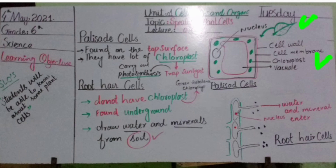The function of root hair cells is to draw water and mineral salts from the soil. You can see here the diagram of the root hair cells — water and mineral salts enter through this portion into the root hair cells. They contain a nucleus but do not contain chloroplasts.